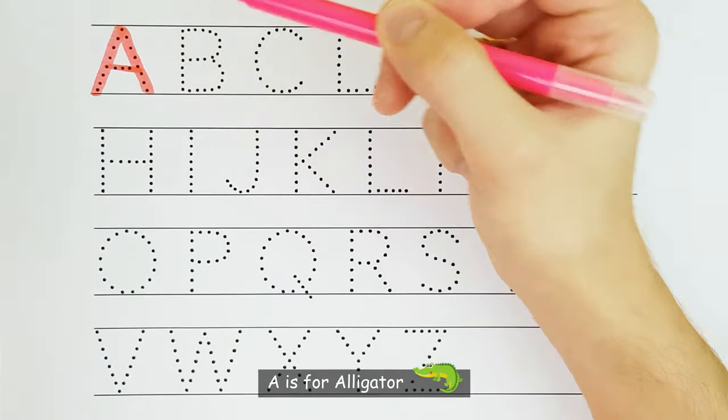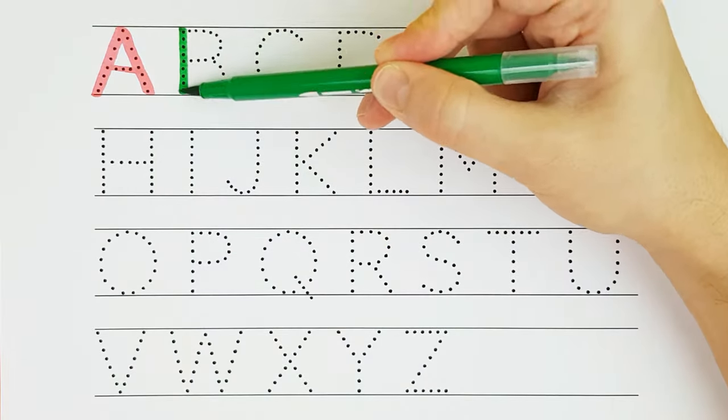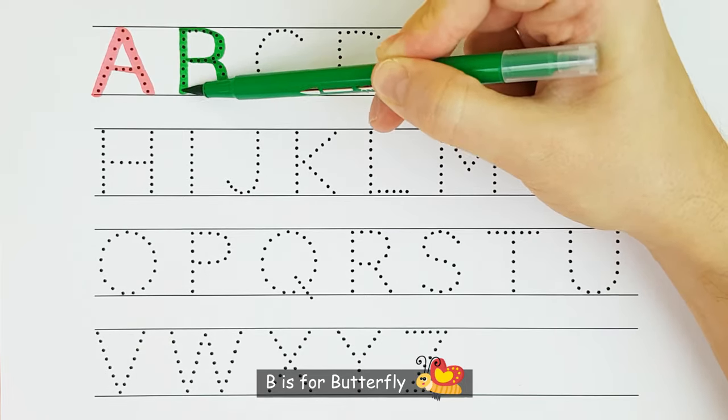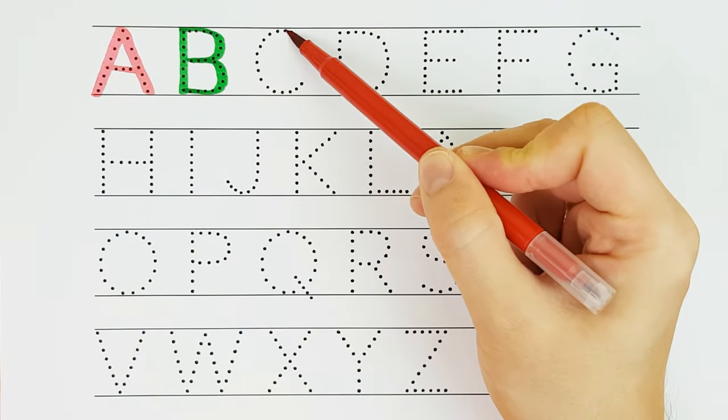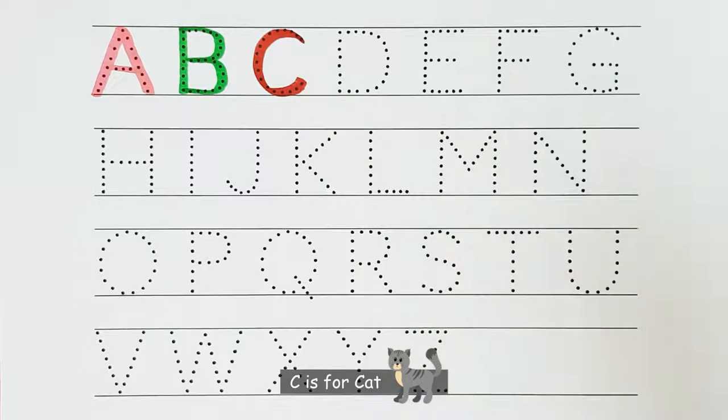A. A is for Alligator. A. B. B is for Butterfly. B. C. C is for Cat. C.